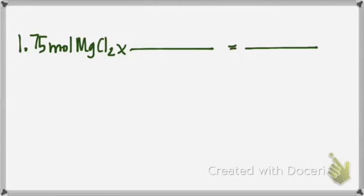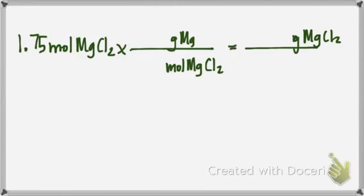So I'm going to have to set it up. This should start ringing a couple of bells for you. Since I have moles in the numerator on the left, I'm going to need to put moles in the denominator, and then I'm going to put grams up in the numerator. And I'm basically making a conversion factor.